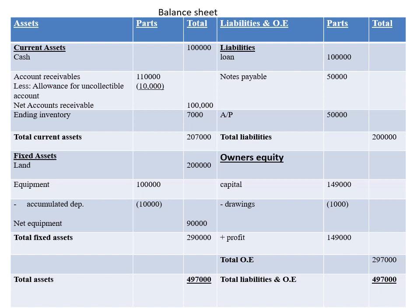Adding fixed assets and current assets gives total assets. On the other side of the balance sheet, we have liabilities and owner's equity. Liabilities include loans, notes payable, and accounts payable, giving total liabilities. For owner's equity, we have capital minus withdrawals plus net profit — the net profit taken from the income statement we prepared. This gives total owner's equity, and at the end, total liabilities plus total owner's equity must equal total assets.